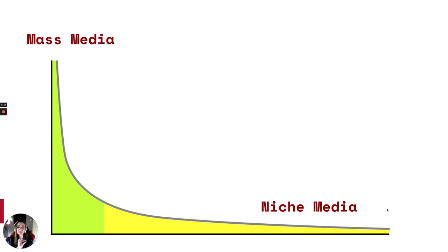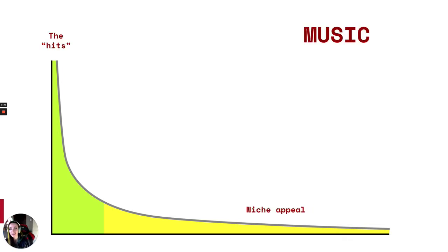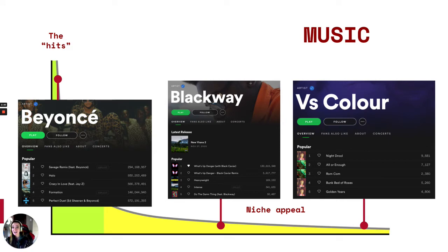That's mass media versus niche media. We can also think about it as the hits — things that are widely appealing — versus media that is niche, appealing only to small groups of people. In the world of music, that might be like Beyoncé. Everybody knows Beyoncé. Here's her Spotify page — her five hits in the popular section are all getting more than 100 million listens. One of them is close to a billion listens. She's a hit maker. Everybody can at least stand to listen to a Beyoncé song.